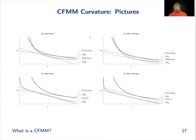Another popular automated market maker is called Curve. It's very flat — it's meant to trade assets that tend to be mean-reverting and very similar to each other in price. We see that the Uniswap slope moves more than the Curve slope, which means that Curve has less curvature.